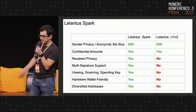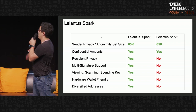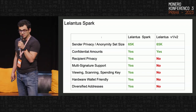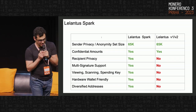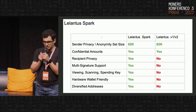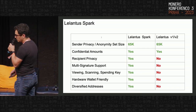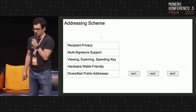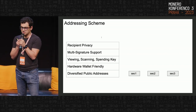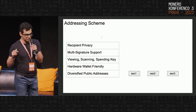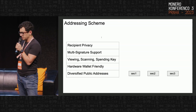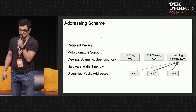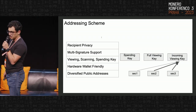Spark supports multi-signature operations and provides more granular control over coins and transactions. In the addressing scheme, the user's secret is composed of three functional components which are used to derive three different keys. The first one is called the incoming viewing key.